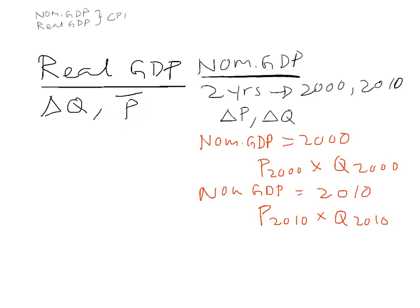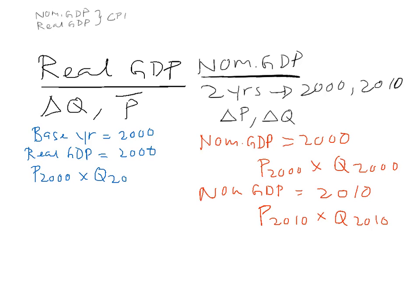With real GDP, we fix the price level. You need to find your base year — let's say the base year is 2000. That means over the two periods, the year 2000 and the year 2010, we fix the price level at the base year of 2000. So real GDP for the year 2000 is based on the price level of 2000 multiplied by the output of 2000. In this case, real GDP for 2000 is the same as nominal GDP for 2000, because the base year is 2000.